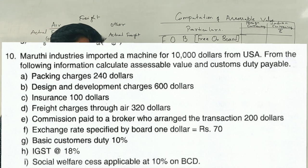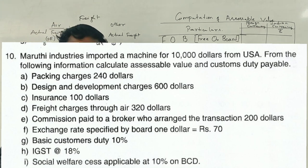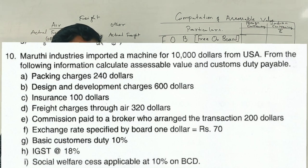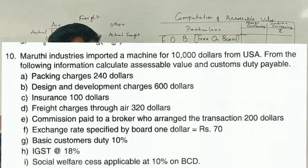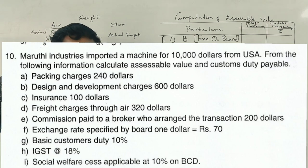Insurance and freight charges through air: $320. Commission paid to a broker on the transaction: $200.